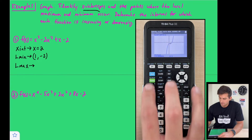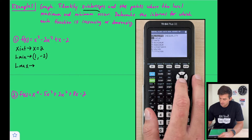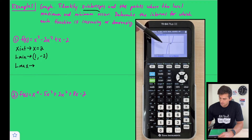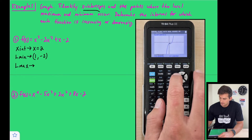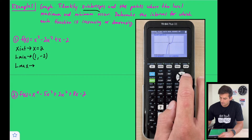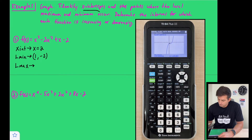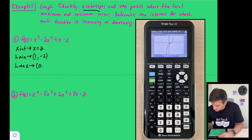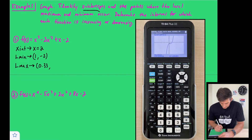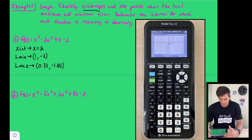Now we find the local maximum. Go to second trace and choose maximum (option 4). Place the cursor to the left of the maximum, hit enter, then to the right, and hit enter again. The calculator tells us the local maximum is approximately (0.33, −1.85). So we now have our local minimum at (1, −2) and our local maximum at approximately (0.33, −1.85).